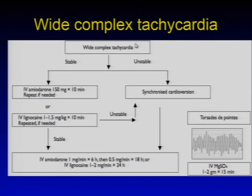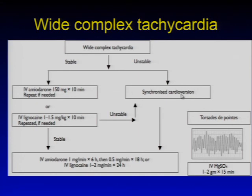Wide complex tachycardia can be stable or unstable. Stable wide complex tachycardia should be treated with IV amiodarone or IV lidocaine followed by infusion. Unstable wide complex tachycardia should be treated with synchronized cardioversion, followed by amiodarone and lidocaine.